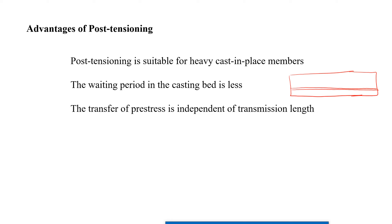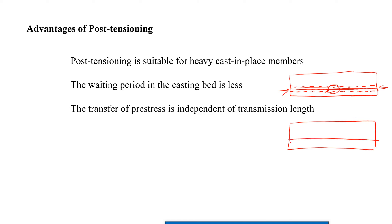In a pre-tensioned member, the bond force is maximum at the ends and decreases toward the mid-span. But in a post-tensioned member, the cable is inside a duct with no contact between steel and surrounding concrete — whatever force is applied at the jack end is the final force, with no loss due to bond between concrete and steel. Therefore, it is independent of the transmission length.